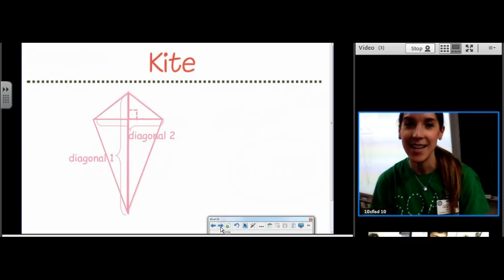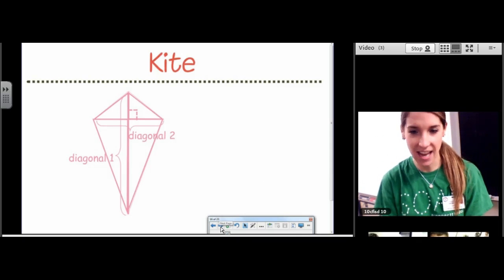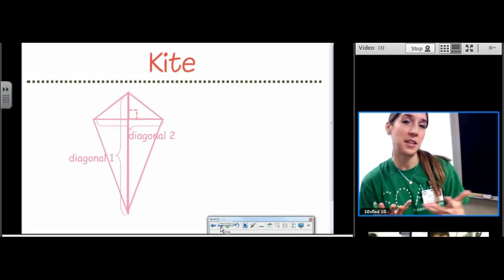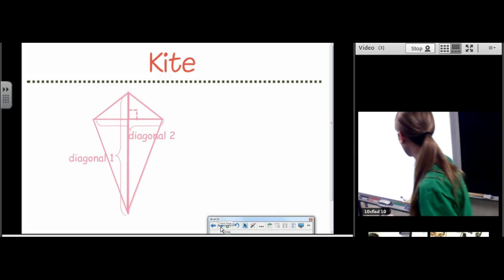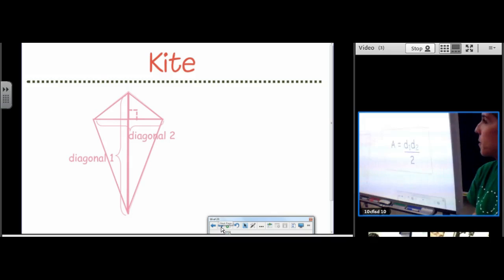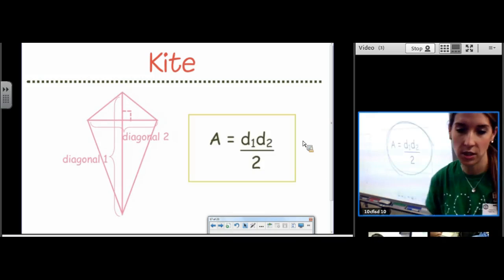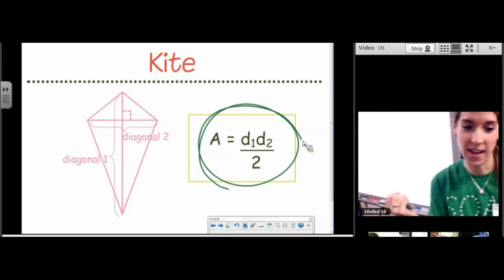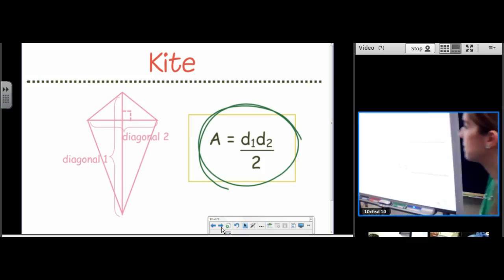Next is kite. The cool thing about a kite is that it has the exact same formula as a rhombus. Since its diagonals are perpendicular like a rhombus. I told you earlier they were like cousins on the family tree because they shared a property. So the formula for the area of a kite is also diagonal 1 times diagonal 2 divided by 2. No different at all. So that's good news.